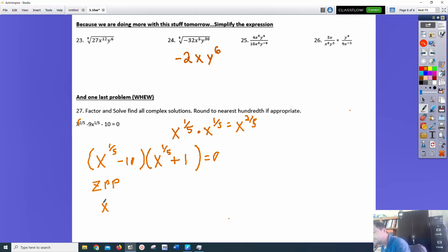That would be x to the 1/5 minus 10 is 0, or x to the 1/5 plus 1 is 0.